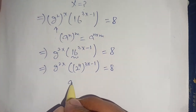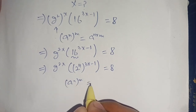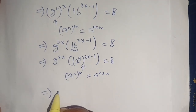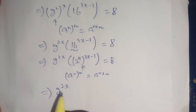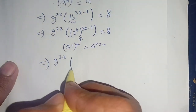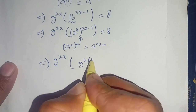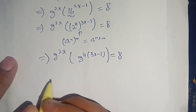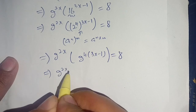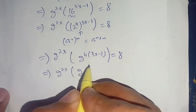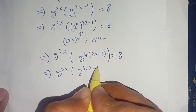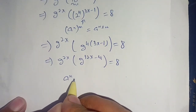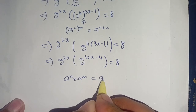Applying the identity (a^n)^m = a^(n·m) again, we get 2^(2x) times 2^(4·(3x - 1)) equals 8, which implies 2^(2x) times 2^(12x - 4) equals 8. This is in the form a^n times a^m = a^(n + m).